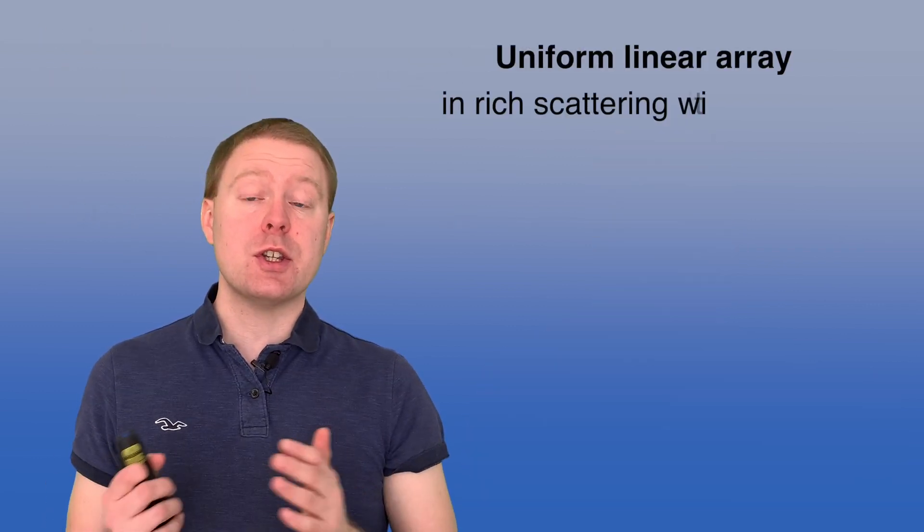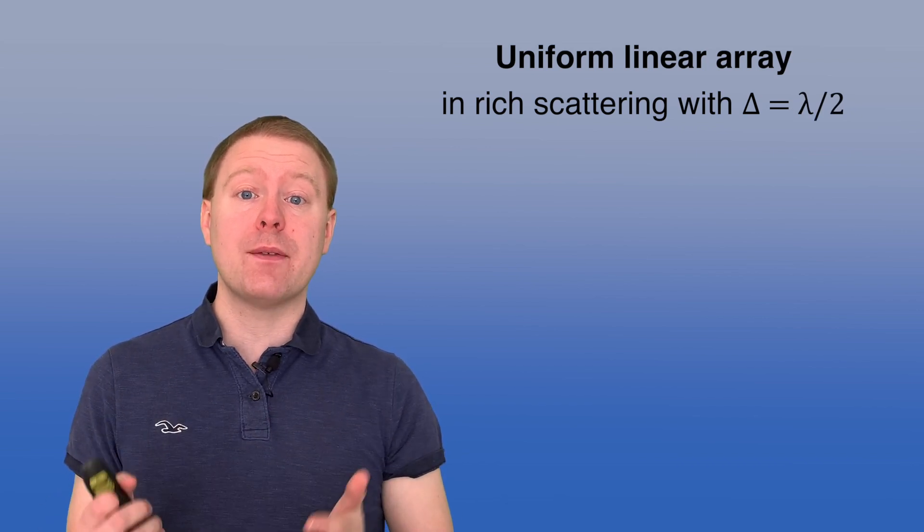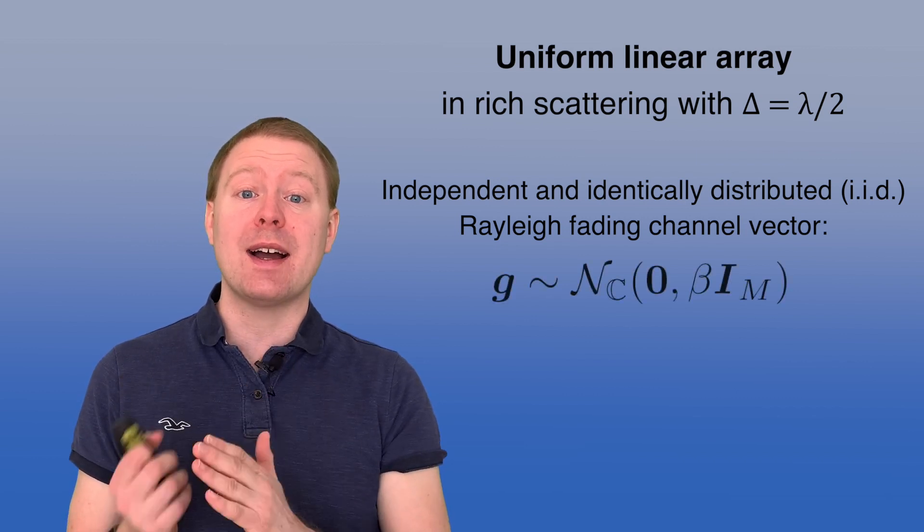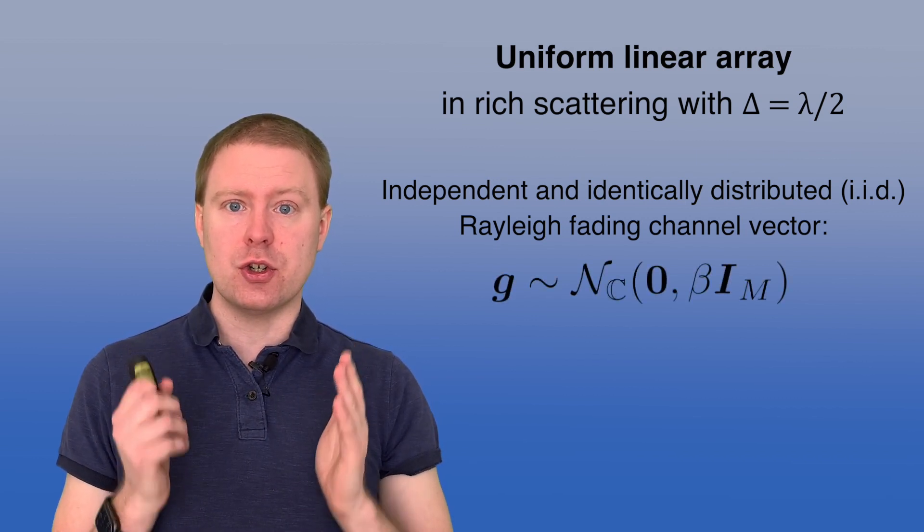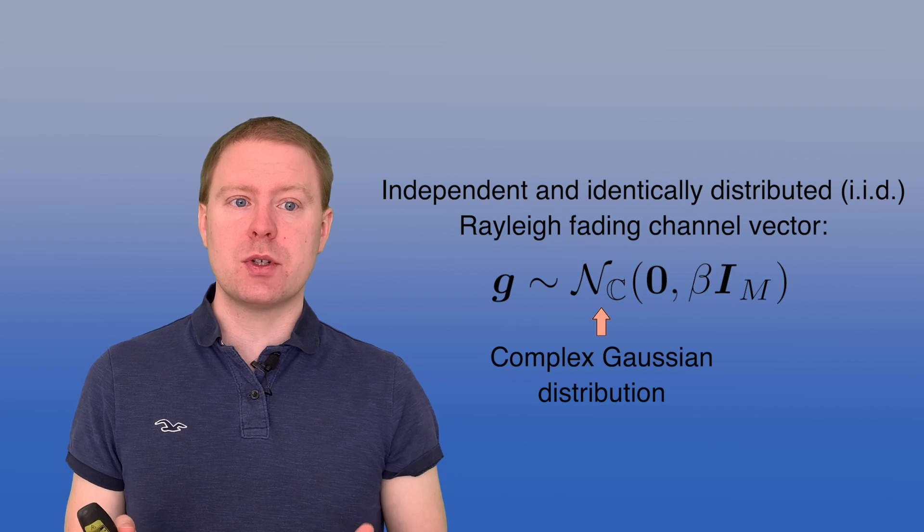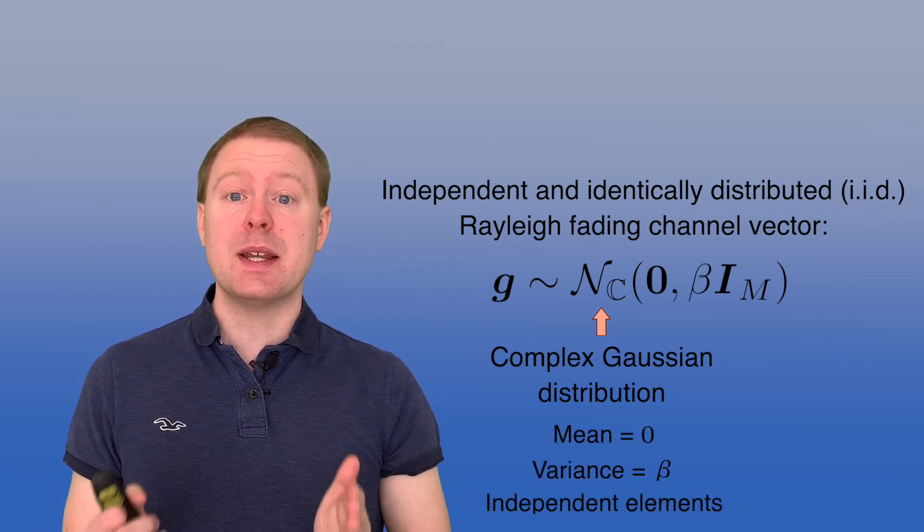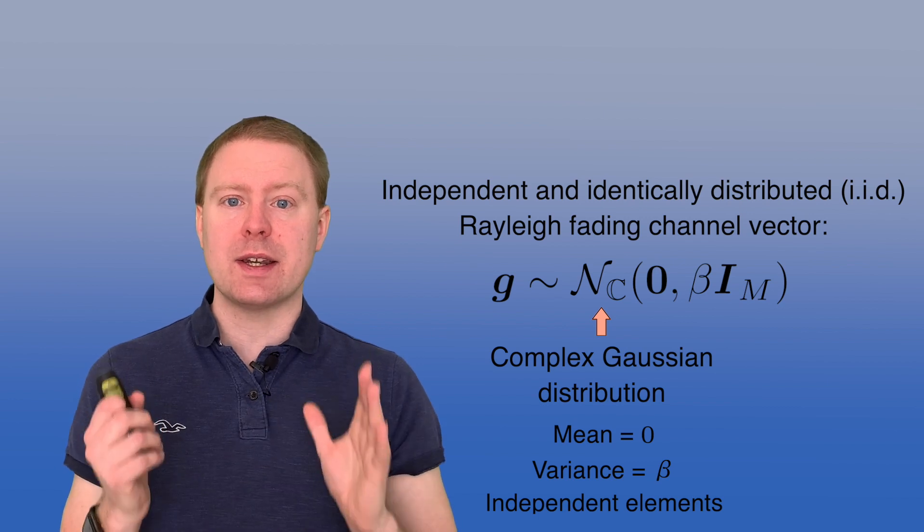So if we are using a uniform linear array with half wavelength antenna spacing, we get what is called independent and identically distributed, or IID Rayleigh fading. So G has a complex Gaussian distribution, the mean value is zero, and the variance is β for each of the elements, and they are independent of each other.